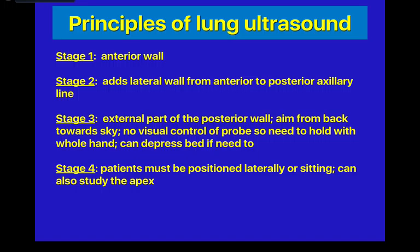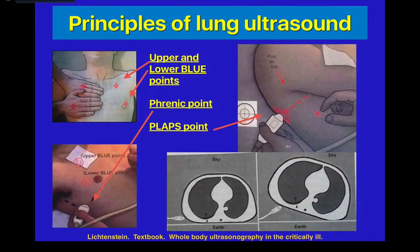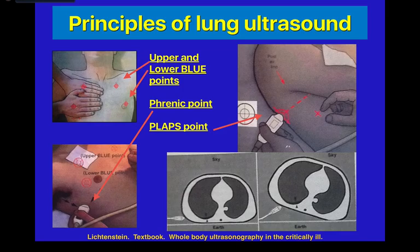Stage four is when the patient must be positioned laterally or sitting. This can also be studied using the apex. These images clarify the zones: the upper and lower blue points, the phrenic point — which I use for pleural effusions — and the PLAPS point. The upper points are used for pulmonary edema, and a combination of many points for pneumonia. As you can see in the images, lifting the ICU patient to the required degree and getting your probe underneath is actually very difficult and the amount of information obtained is limited.